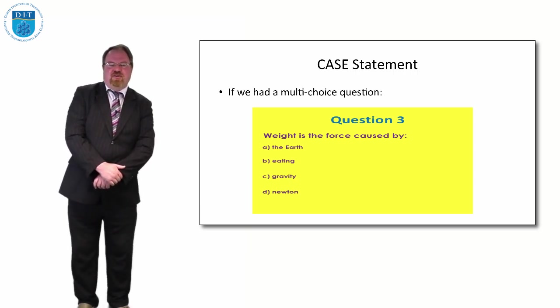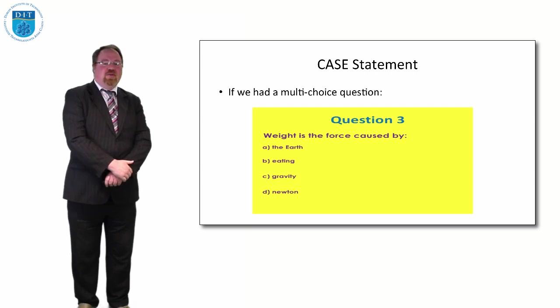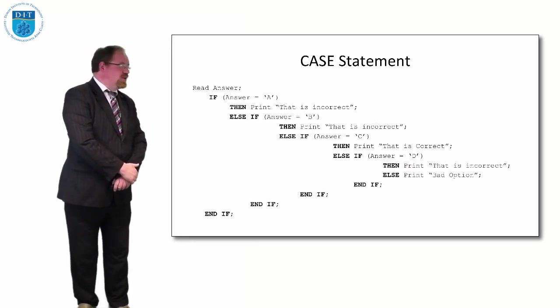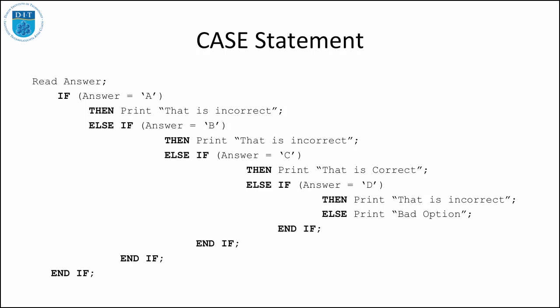If we wanted to check what the user input using IF statements, we'd have to say: if answer equals A then print that's incorrect, else if answer equals B then print that's incorrect, else if answer equals C print that's correct, else if answer equals D print that's incorrect, else print out bad option or something like that.